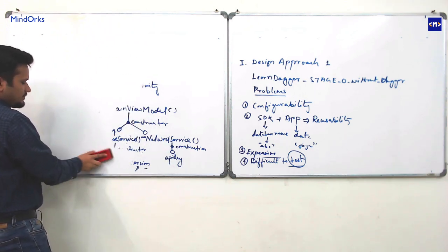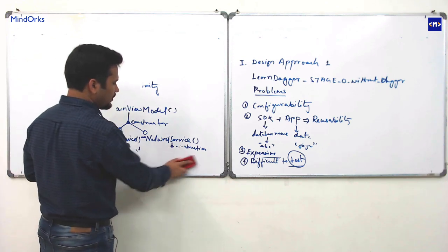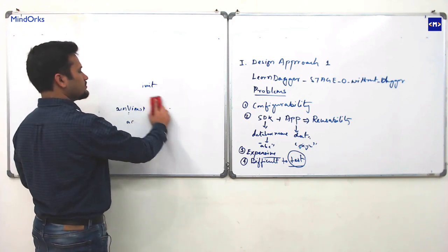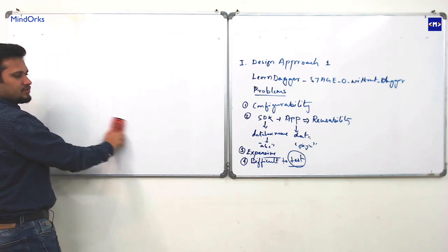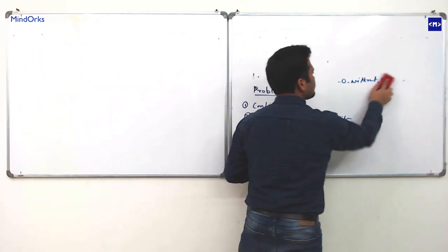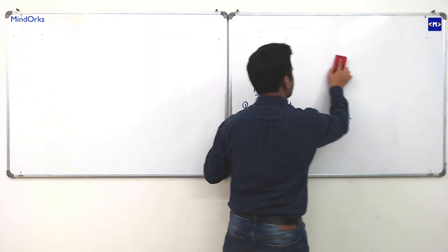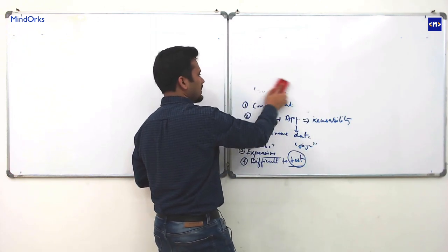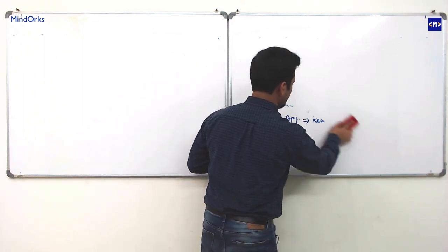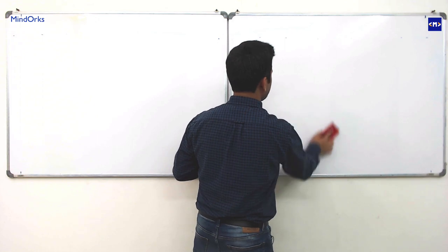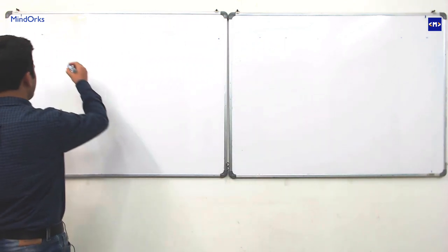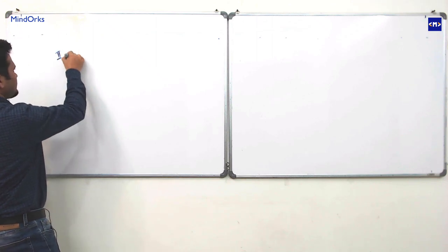Dependency management is something you should consider from the very first day you are designing your application. With time, a lot of code comes into your codebase and becomes unmanageable. Now we will see a different approach — Design Approach 2.